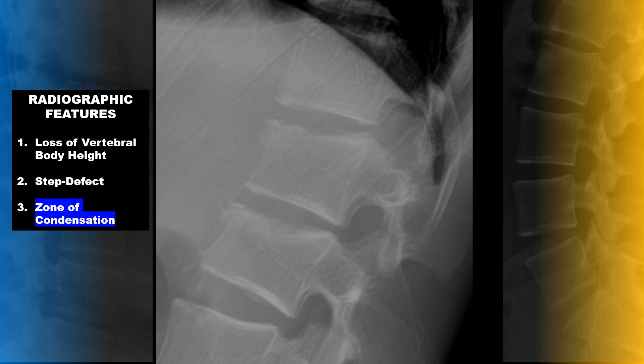The zone of condensation is this impacted or compressed bone which shows up as an area of increased density in the radiograph.